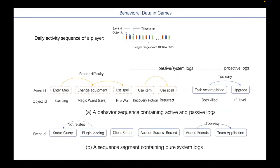Next we introduce our datasets. Player behavior in-game is a very common data type. No matter what type of game, the player's operations will be recorded in the form of logs. These are logged in chronological order where each event indicates a specific player action or system event recorded at that moment. Each event consists of three parts: time step, event ID, and object ID. A player event can be proactive, passive, or part of a system log.